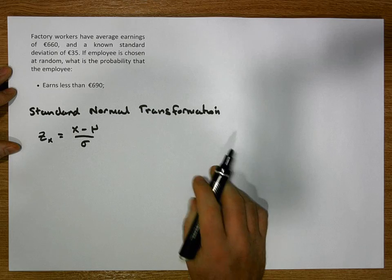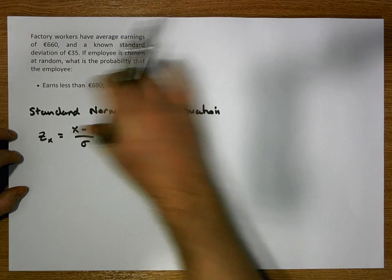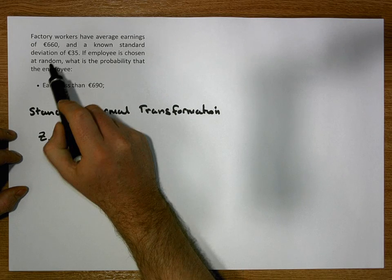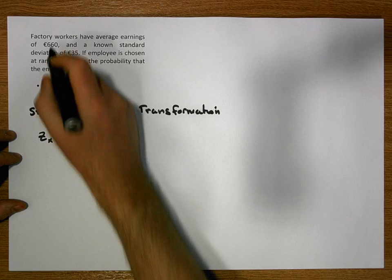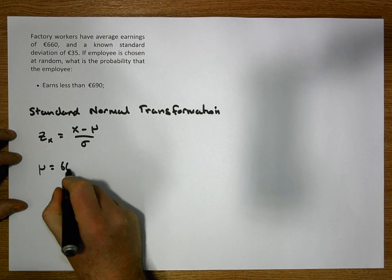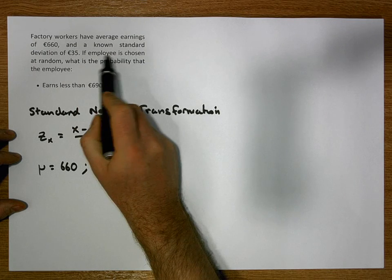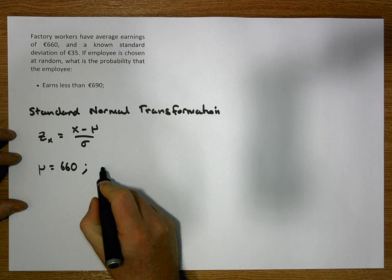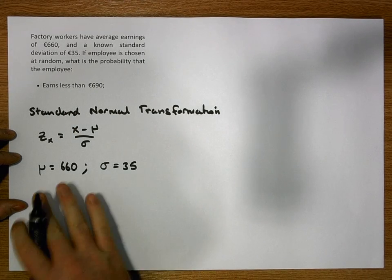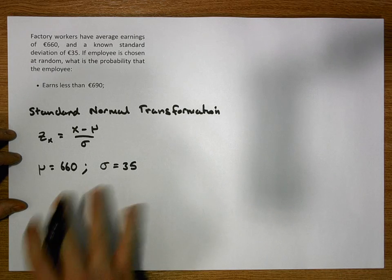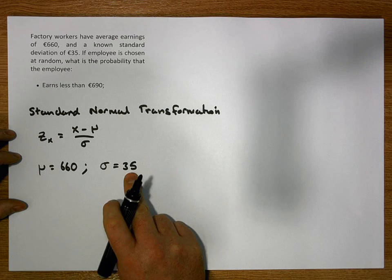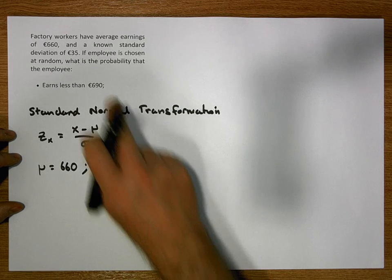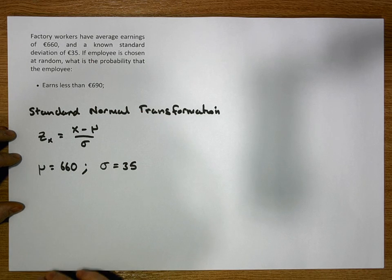The first thing we always do is identify the population mean and population standard deviation. In this case, the factory workers' average earnings are 660 euros, so the population mean μ = 660. The population standard deviation σ = 35 euros. We're always going to look for these two values when dealing with the standard normal transformation.